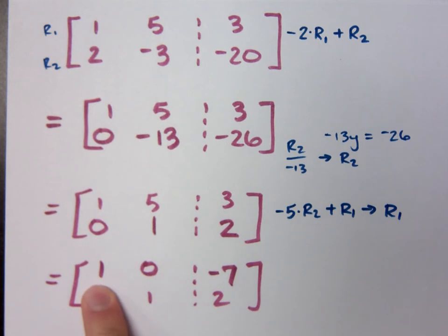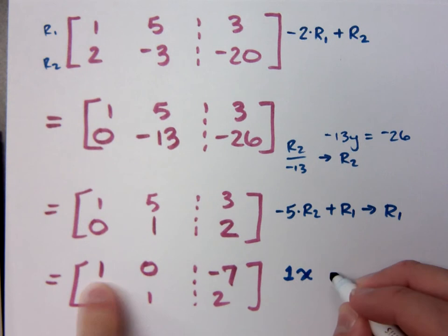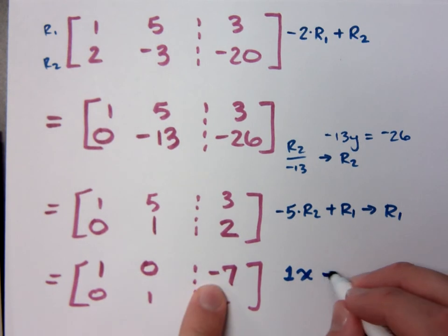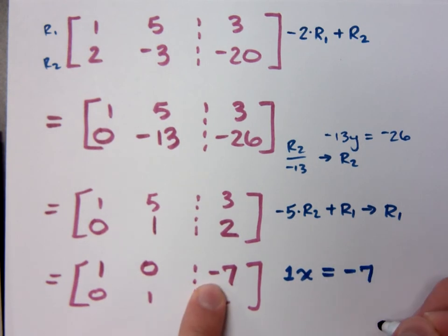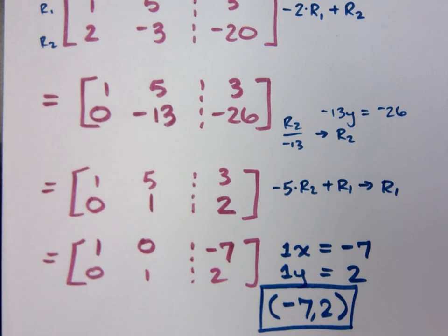What does this 1 stand for? This means that I have 1X, 0Y, and this equals negative 7. I have 0Y, actually 0X, and 1Y, that equals 2. So what do you think that means for my solution? It's negative 7, 2.